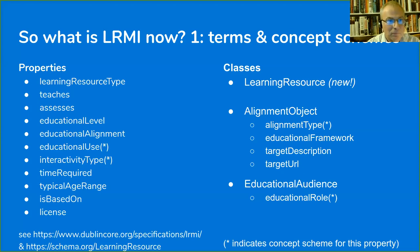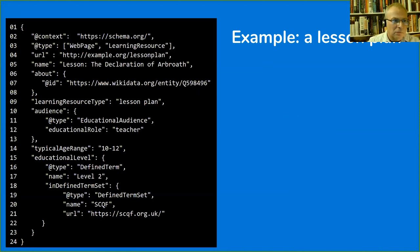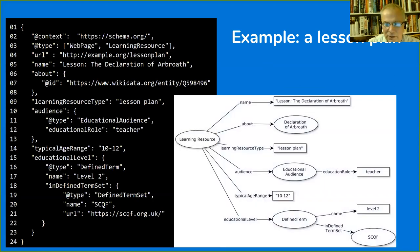So what is LRMI now? First, as a set of concept schemes and terms — you can see on screen the properties and classes currently in schema.org, most of which are also in the Dublin Core namespace. Rather than run through all these properties individually with definitions, which is quite dry, I prefer to show a couple of examples of what they might look like in use. Here's some JSON-LD describing a lesson plan, and if you prefer your metadata as pictures, here you have a diagram of the same graph.